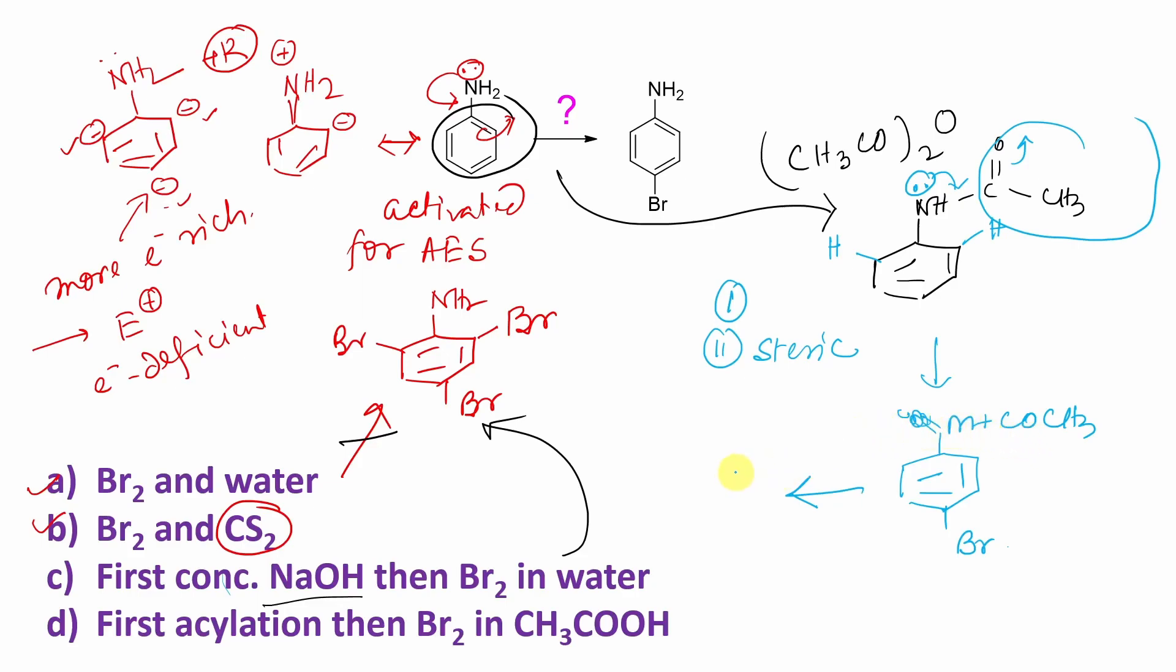And if you want to get this final product, 4-bromoaniline, how can you get? Obviously, by treatment with concentrated NaOH and heat. What happened in this reaction? In presence of this strong alkali NaOH, this amide hydrolysis happened. This aromatic amine attached to this carbonyl group. So this amide hydrolysis happened and ultimately produced our desired product, 4-bromoaniline.